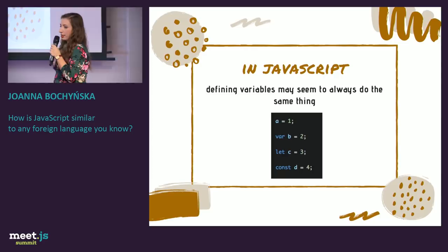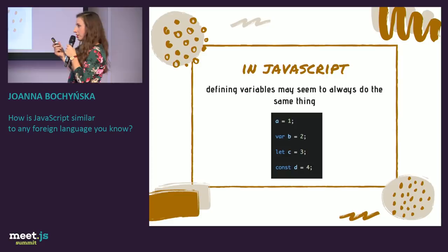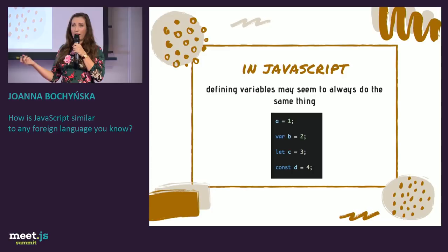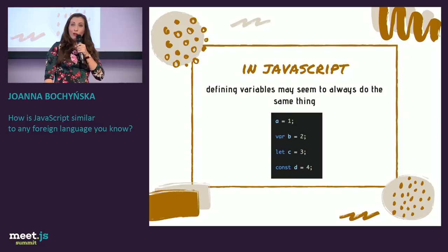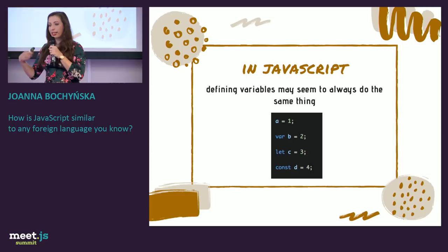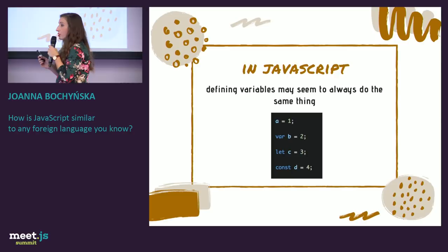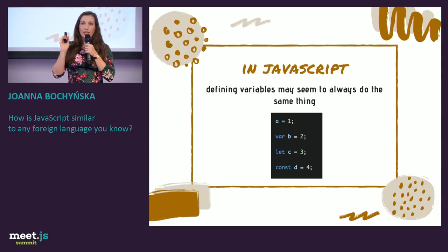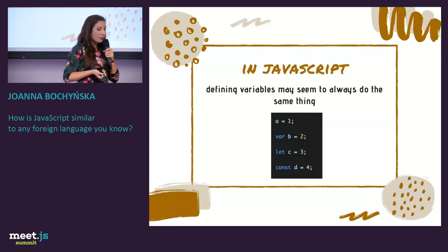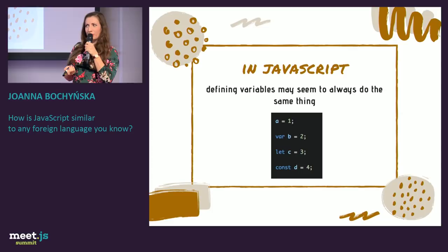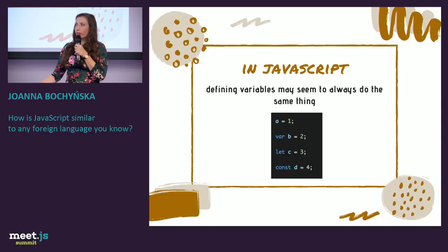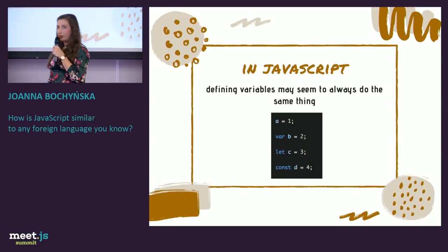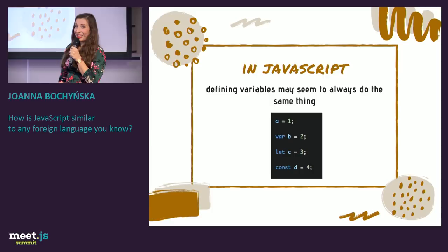In JavaScript, a very simple example: defining variables. For someone new to JavaScript, it may seem like they all do the same thing — just create variables and assign numbers. But we know this isn't the case: we have global variables, local variables, and differences between 'let' and 'const.' At first sight you can use them interchangeably, but just as using 'mohabbat' for a father-child relationship would confuse people, defining a global variable can cause trouble in your code later.